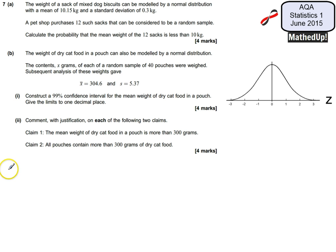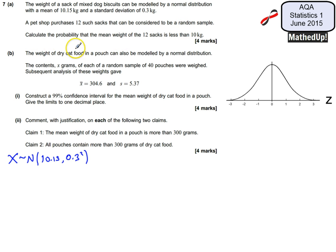I'll start by defining the problem. The random variable X is normally distributed with a mean of 10.15 and a variance of 0.3 squared. Because we've taken a random sample and we're looking at the probability that the mean weight of the 12 sacks is less than 10kg, I define X-bar, which is normally distributed with the same mean of 10.15.